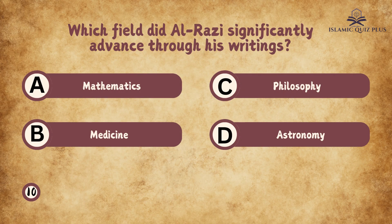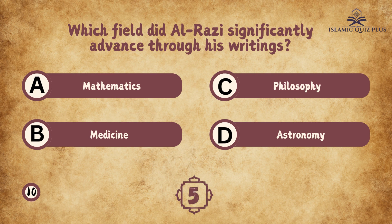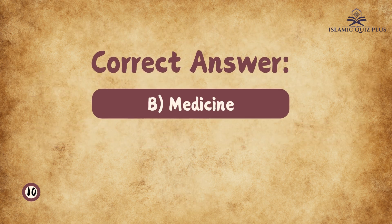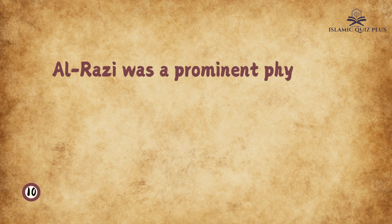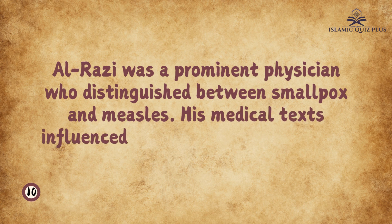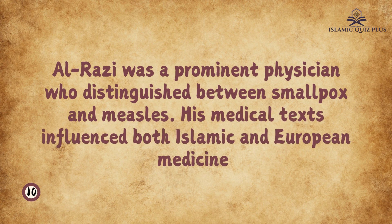Question 10: Which field did Al-Razi significantly advance through his writings? A. Mathematics, B. Medicine, C. Philosophy, D. Astronomy. The correct answer is B. Medicine. Al-Razi was a prominent physician who distinguished between smallpox and measles. His medical texts influenced both Islamic and European medicine.